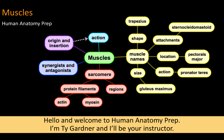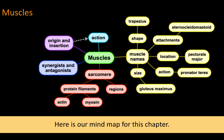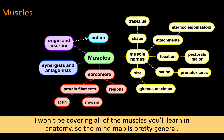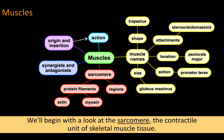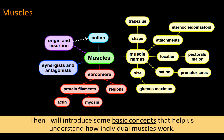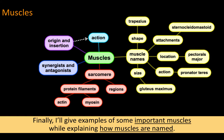Hello and welcome to Human Anatomy Prep. I'm Ty Gardner and I'll be your instructor. Here's our mind map for this chapter. I won't be covering all the muscles you'll learn in anatomy, so the mind map is pretty general. We'll begin with a look at the sarcomere, the contractile unit of skeletal muscle tissue. Then I will introduce some basic concepts that will help us understand how individual muscles work. Finally, I'll give examples of some important muscles while explaining how muscles are named.